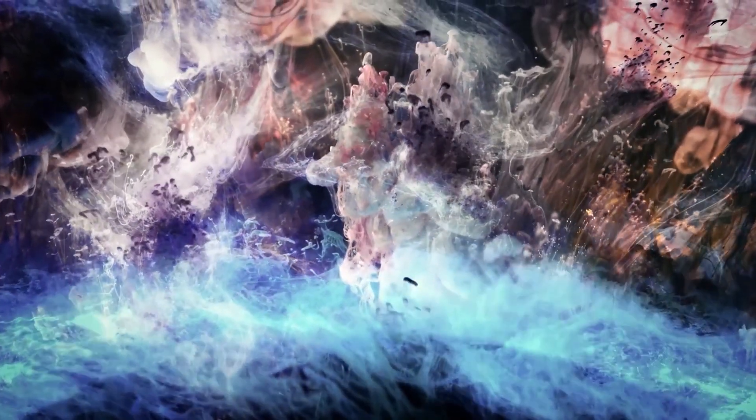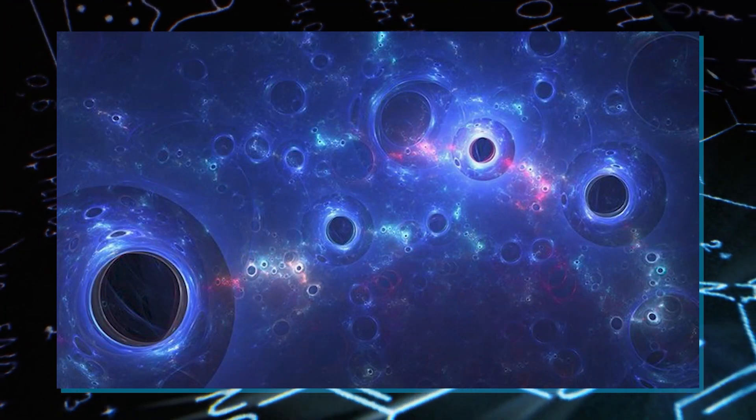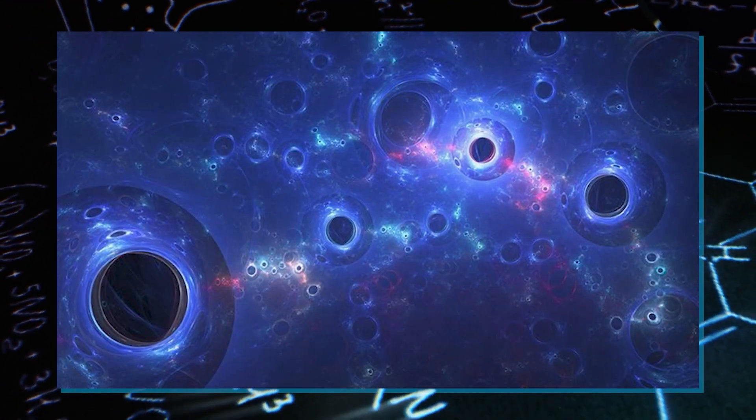Over billions of years, the universe changed. Dark matter, which doesn't give off light, started to have a big influence because it's much heavier than regular matter. Scientists think there's about six times more dark matter than regular matter.